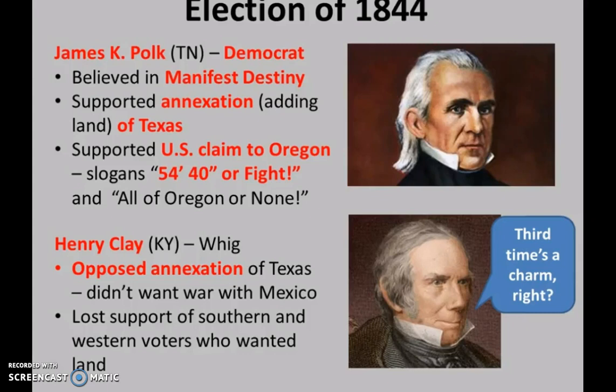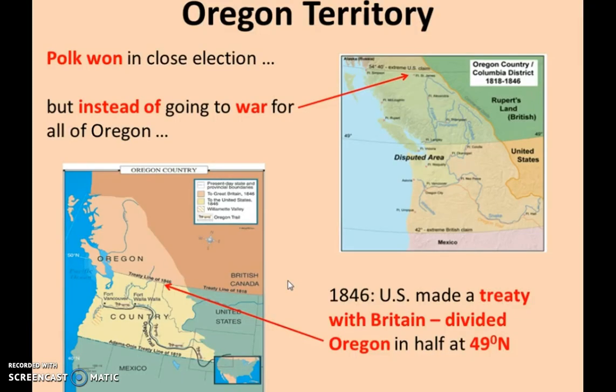James K. Polk was the Democratic candidate and a strong believer in Manifest Destiny. He supported the annexation of Texas and also the U.S. claims to Oregon, disputed by Great Britain. His campaign slogans included '54-40 or fight' and 'All of Oregon or none,' referring to the latitude line 54 degrees 40 minutes in present-day Canada. He was opposed by Whig candidate Henry Clay, who opposed Texas annexation to avoid war with Mexico and to prevent spreading slavery. Clay's positions cost him Southern and Western voters, and Polk won in a very close election.